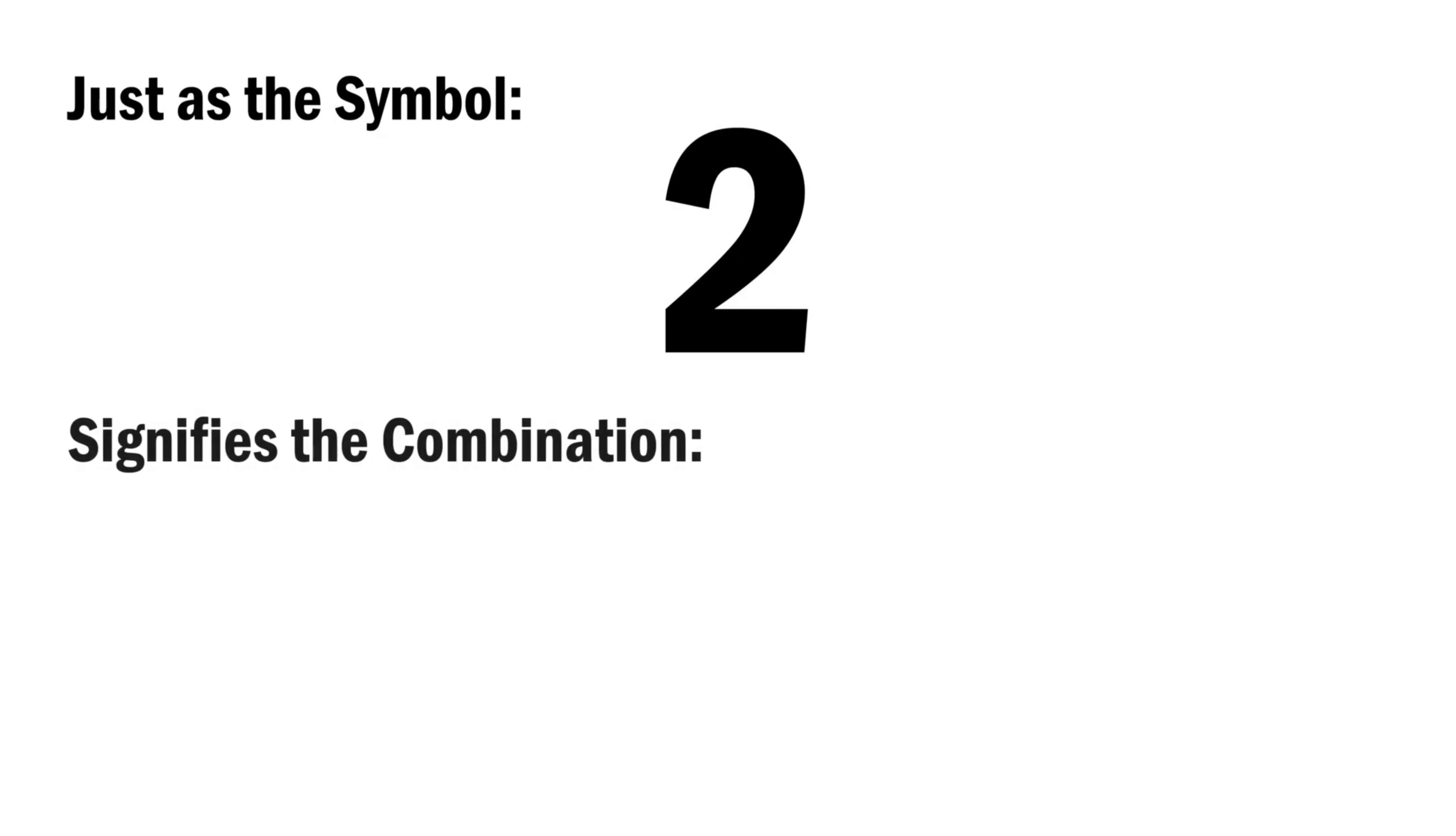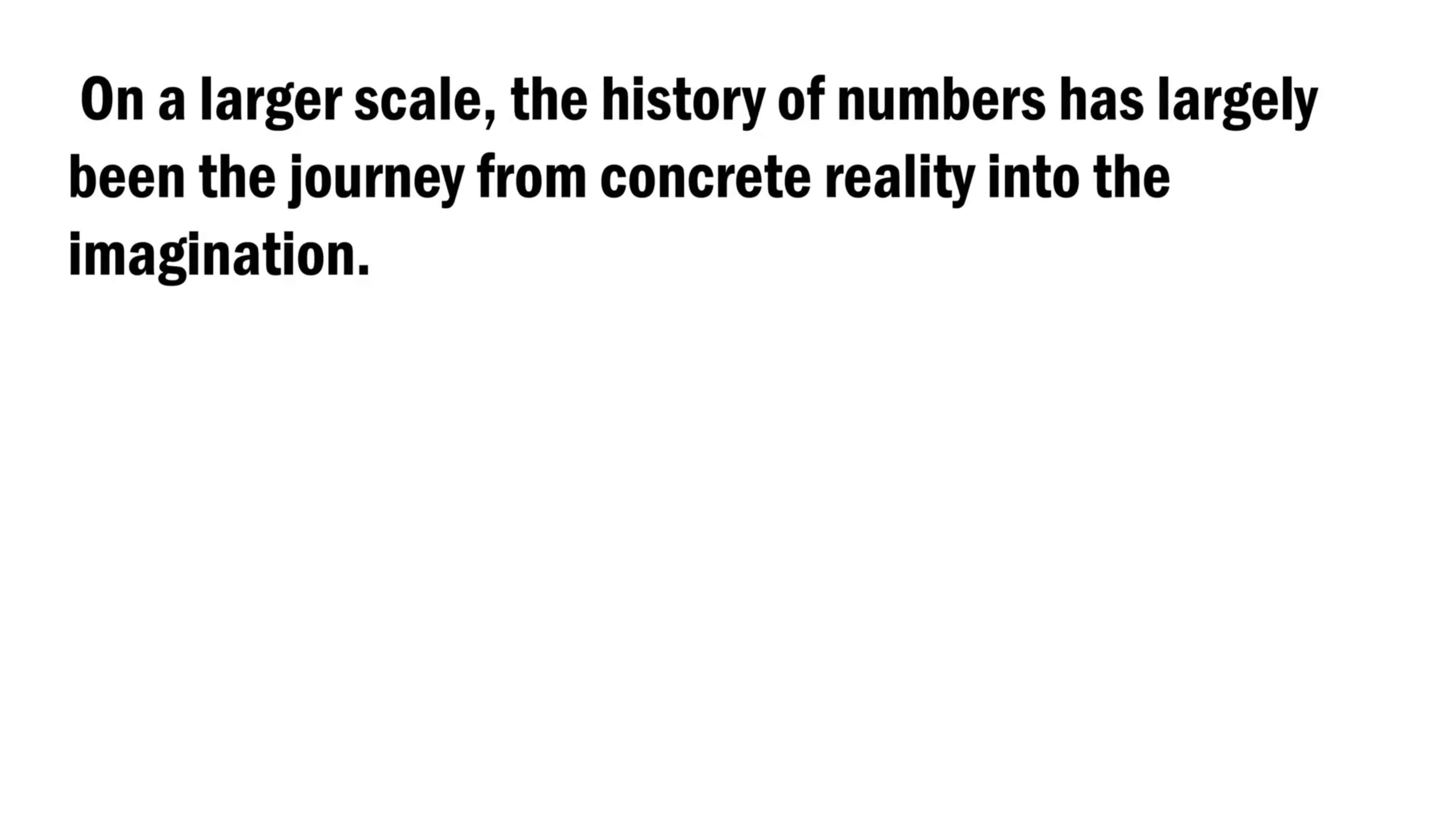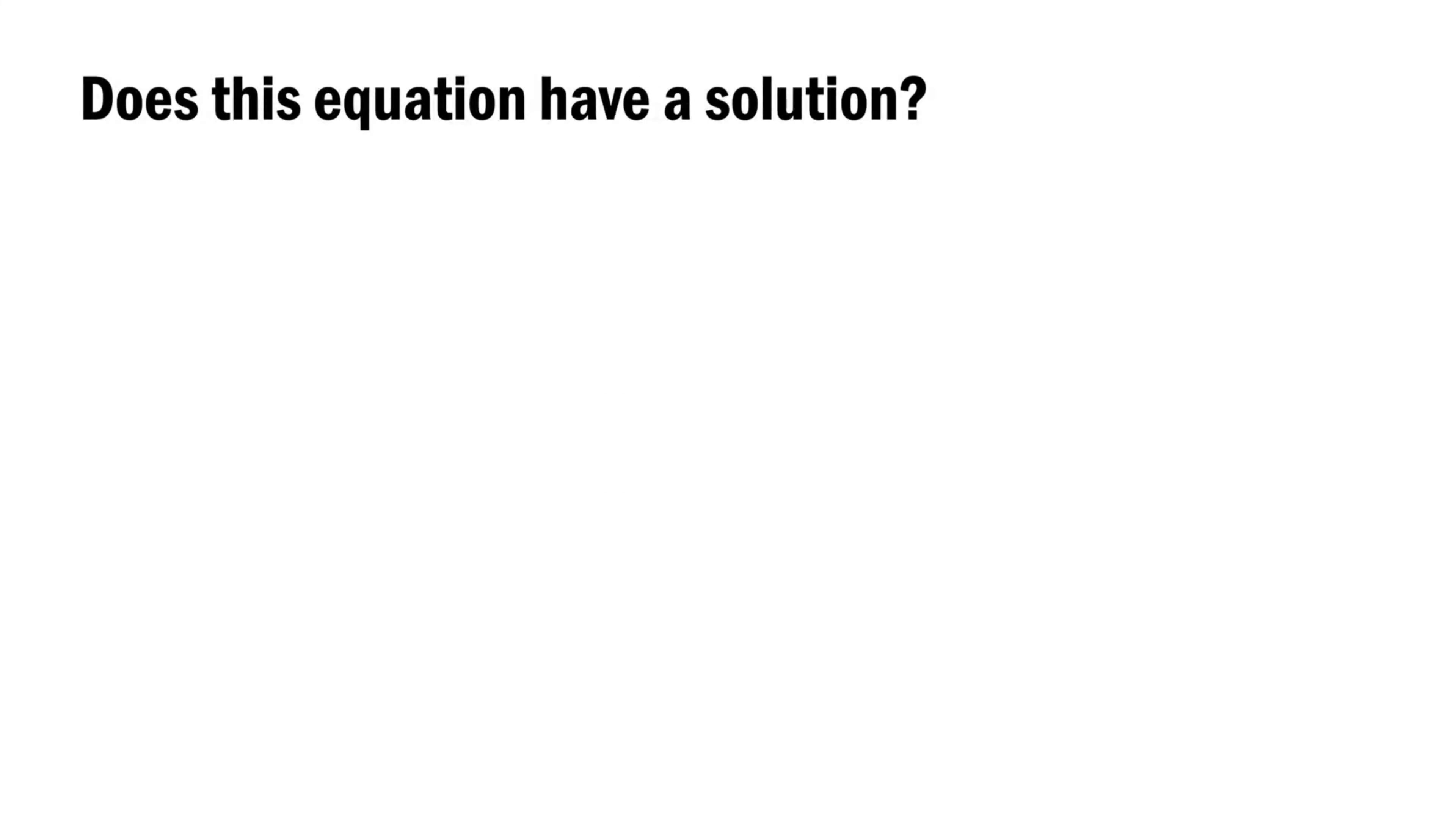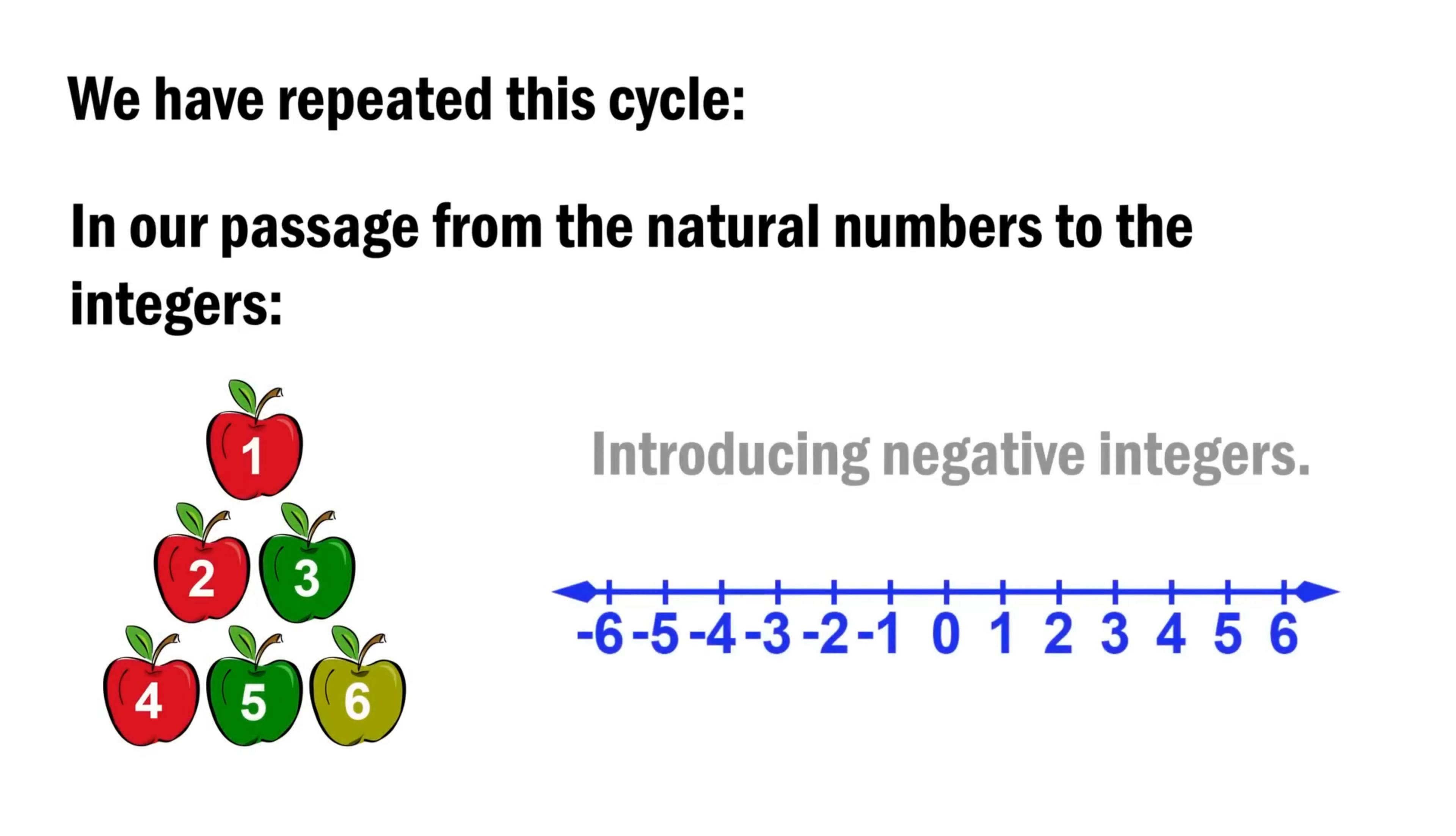Just as the symbol 2 signifies the combination 1 plus 1, the symbol for the square root of 2 satisfies the equation x times x equals 2. Now on a larger scale, the history of numbers has largely been the journey from concrete reality into the imagination. Does this equation have a solution? Can it? We have repeated this cycle in our passage from the natural numbers to the integers, introducing negative integers.